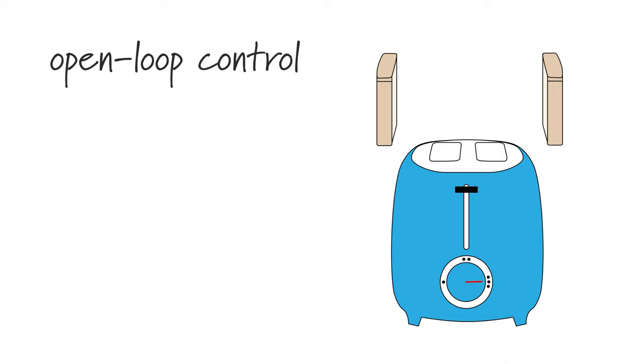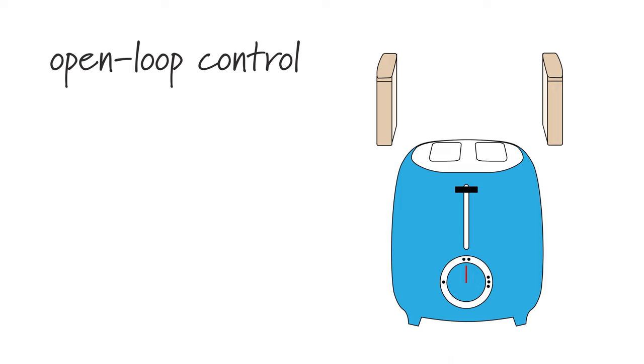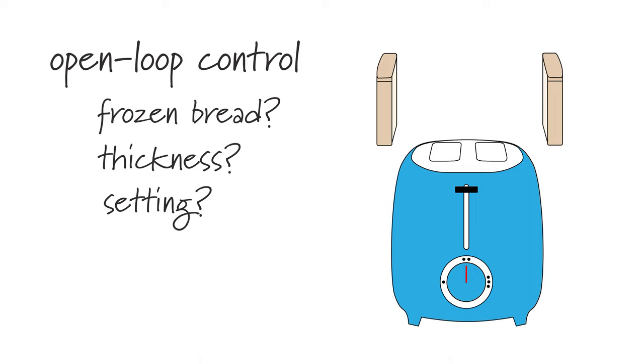Whether the toast pops out with the color you desired depends on many factors, including whether the bread was frozen going into the toaster, how thick the slice of bread is, and the setting you selected. The toaster doesn't measure the color of the bread, which is the output, so there is no feedback that can be used to compensate for these other disturbances to the toasting process.